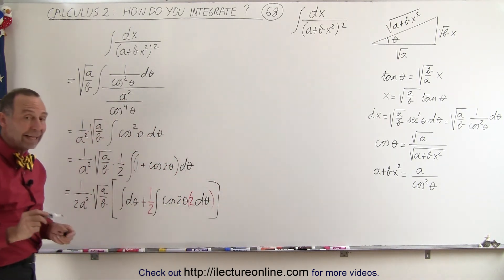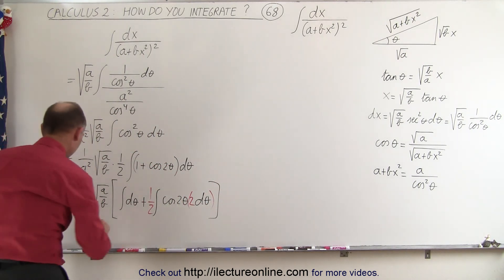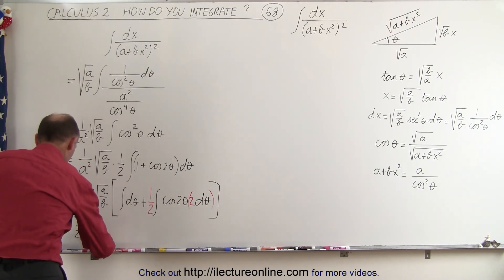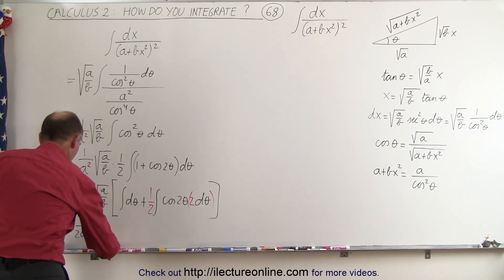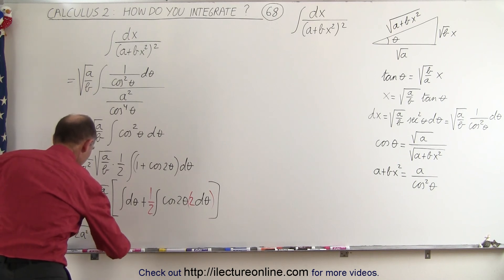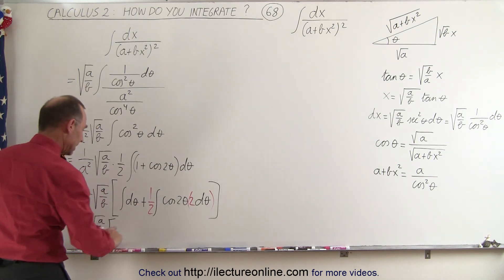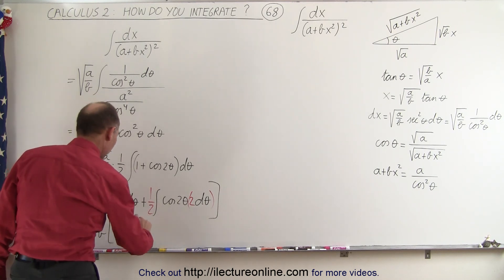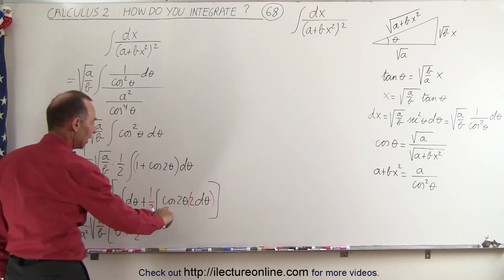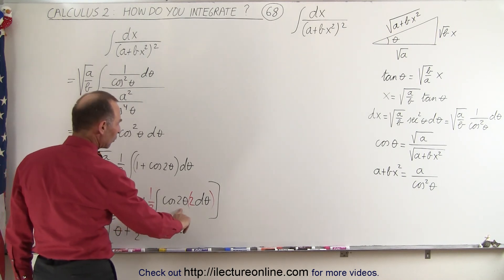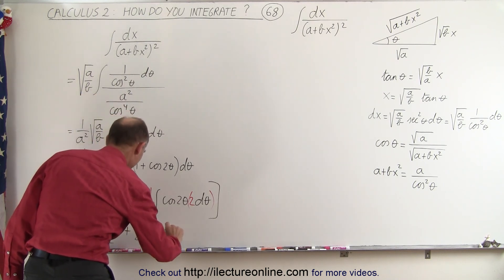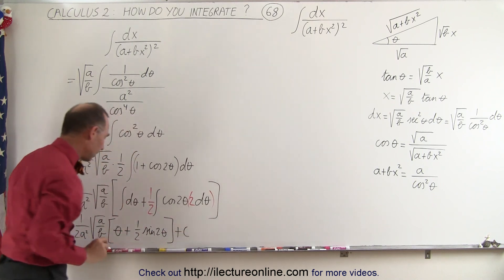We can now go ahead and integrate both integrals. We get this is equal to 1 over 2A squared times the square root of A over B. The integrals are relatively easy: this gives theta plus 1 half times — the integral of the cosine of 2 theta is the sine of 2 theta — plus a constant of integration.